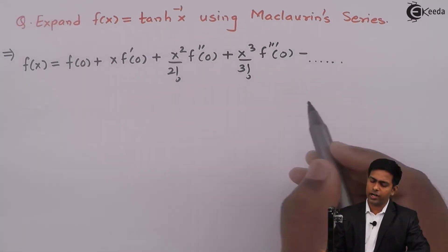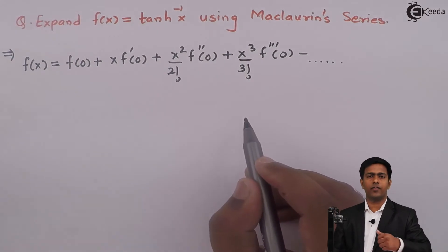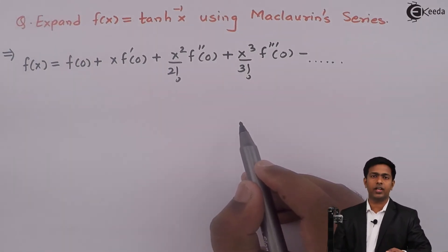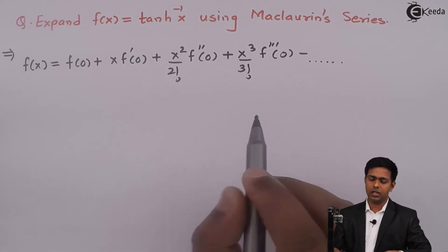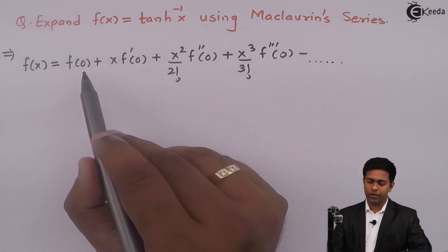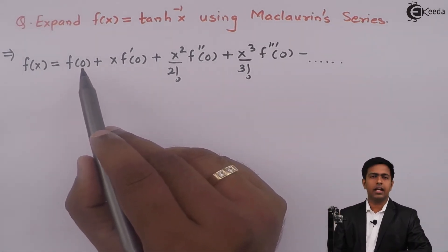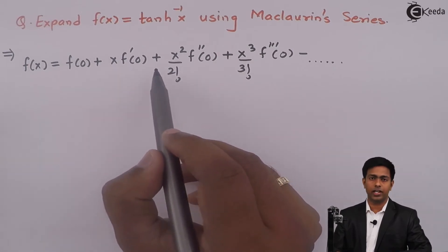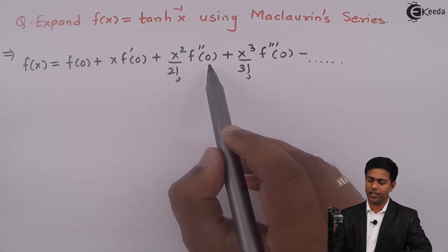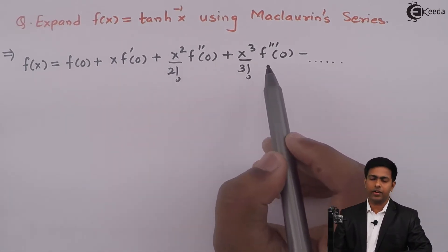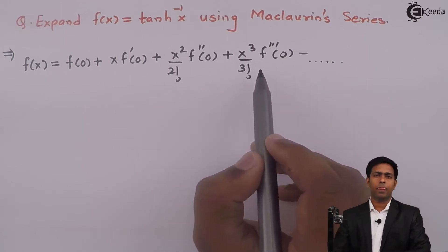So we need to find the derivatives f'(x), f''(x), f'''(x) and then substitute x = 0 to obtain f(0), f'(0), f''(0), f'''(0), and so on.